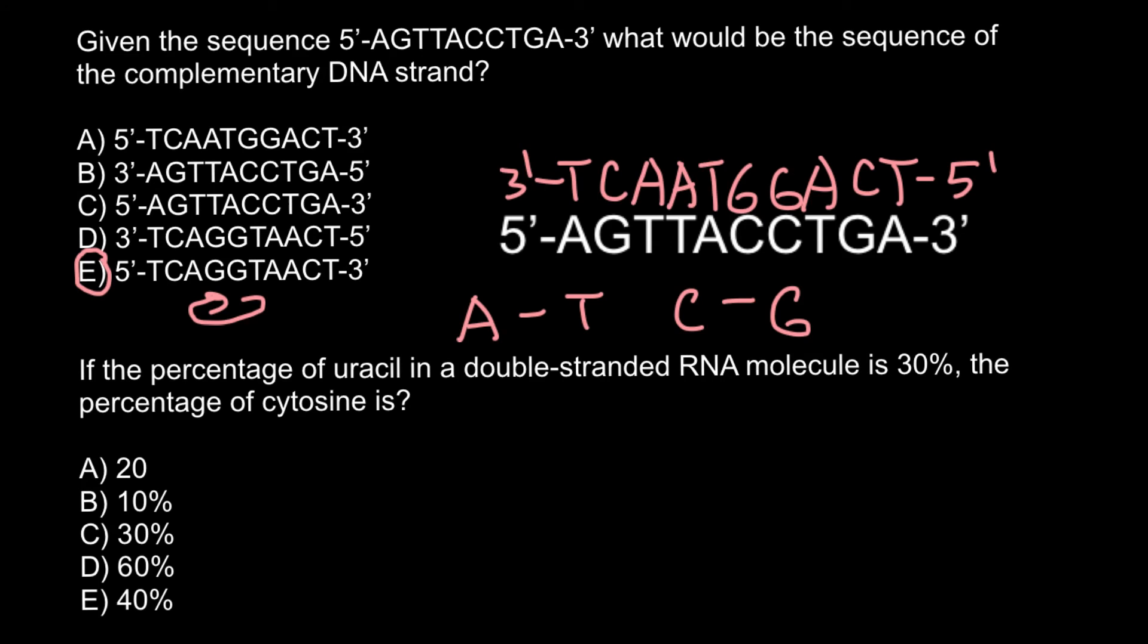So let's now return to our problem. If the percentage of uracil in double-stranded RNA... in RNA, thymine would be substituted with uracil. So we also can put uracil here. If it is going to be RNA, then instead of thymine we would have uracil that is going to base pair with adenine.